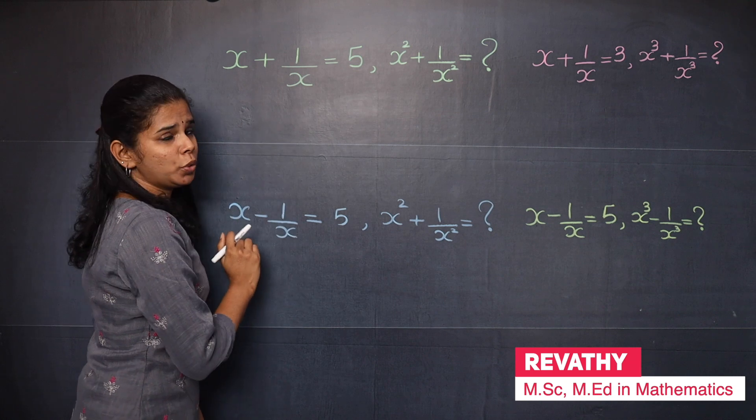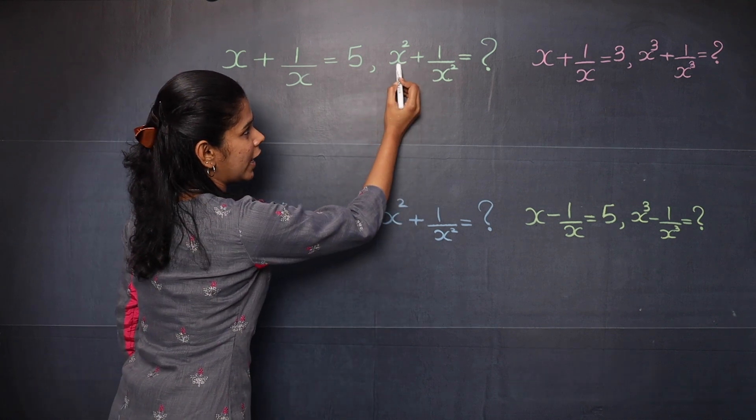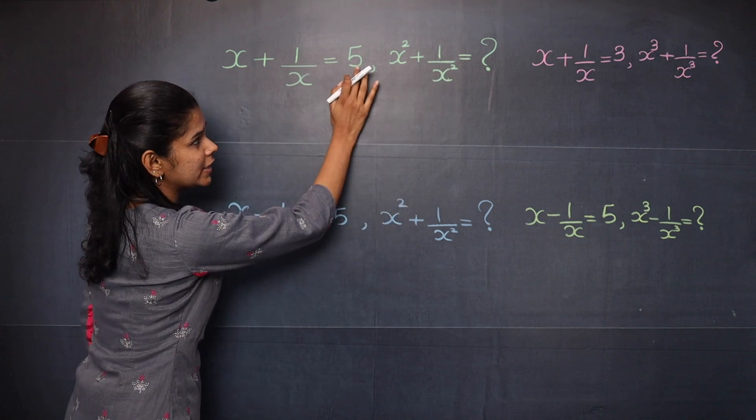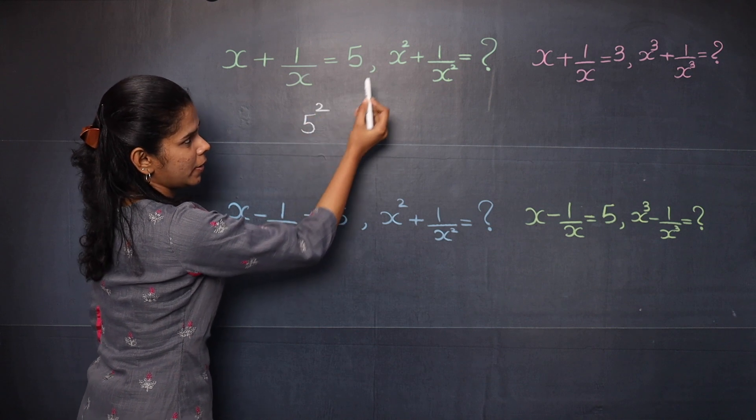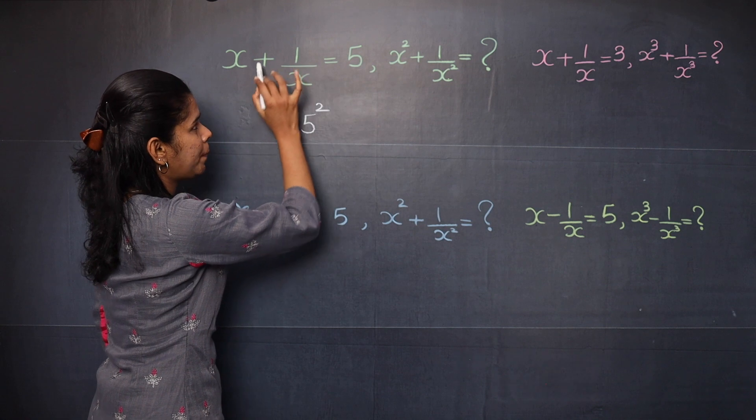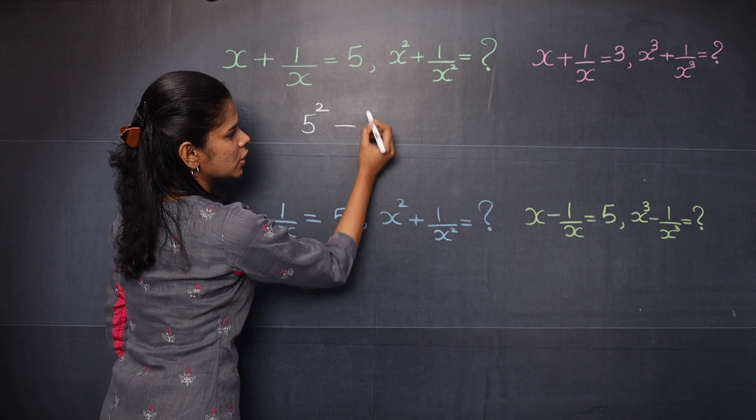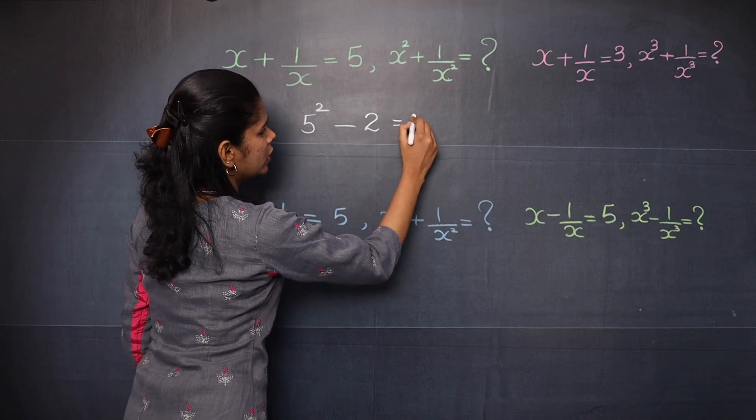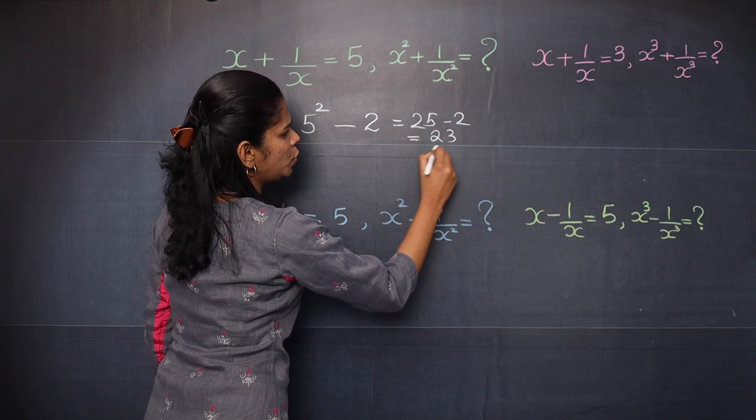Here what you need to do is check what you need to find. That is x square plus 1 by x square. So the first step is 5 square, because you need to find x square plus 1 by x square. And plus and plus becomes minus, then this 2 you should write here. So what is 5 square? 25 minus 2 equal to 23.